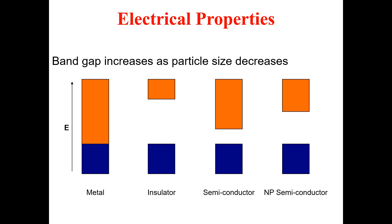We will start our discussions on the electrical properties of nanomaterials by first comparing the band gap of different kinds of materials. Just as mentioned in the previous lecture, band gap increases as particle size decreases. We have conductors or metals, insulators, and semiconductors. Metals have overlapping conduction and valence bands. In insulators, there exists a huge band gap between the valence and conduction band, making it almost impossible for electrons to cross.